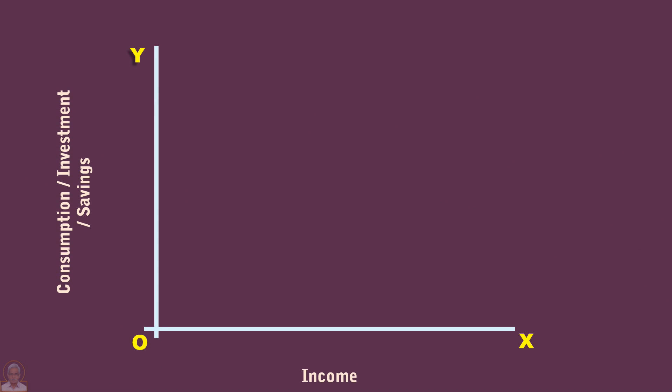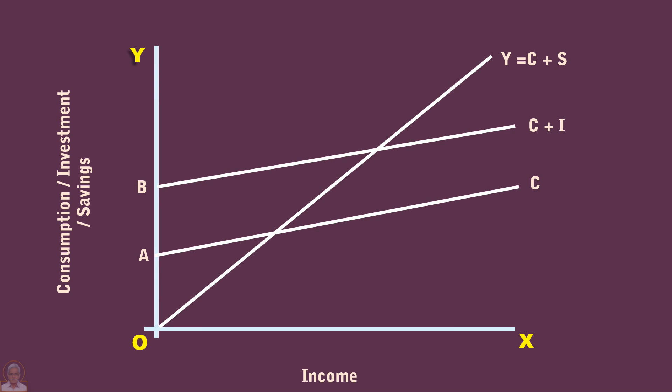Look at the graph. Y equal to C plus S is the aggregate supply curve. C represents the consumption function. C plus I is the aggregate demand curve.